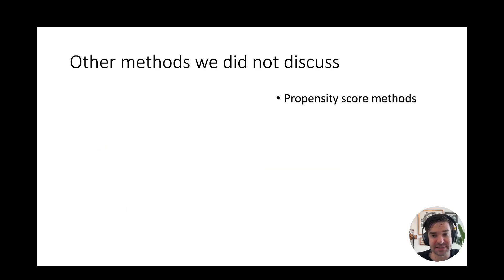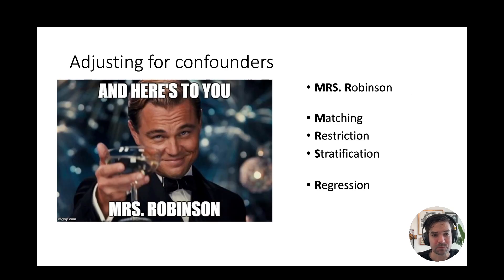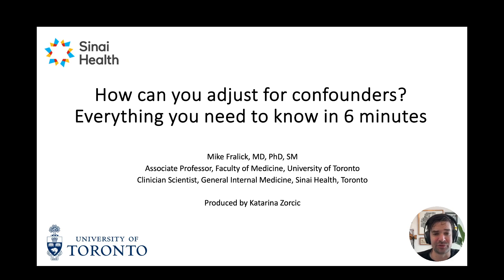Other methods we didn't discuss include propensity score methods — we'll link to a video on that, which has had over 80,000 views — and instrumental variables, which I think of as a bit like a unicorn: I'm not totally sure if they exist. To recap, in an observational study, the acronym for analytic techniques to adjust for confounders is Mrs. R: matching, restriction, stratification, and regression. Thanks again to Katerina Zorchich for producing these slides, and have a great day.